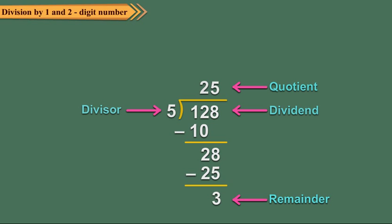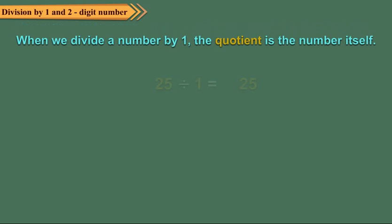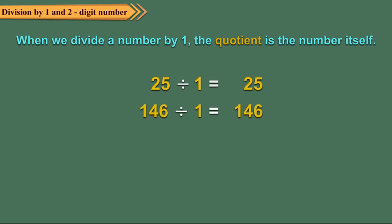Now let us discuss some properties of division. When we divide a number by 1, the quotient is the number itself.